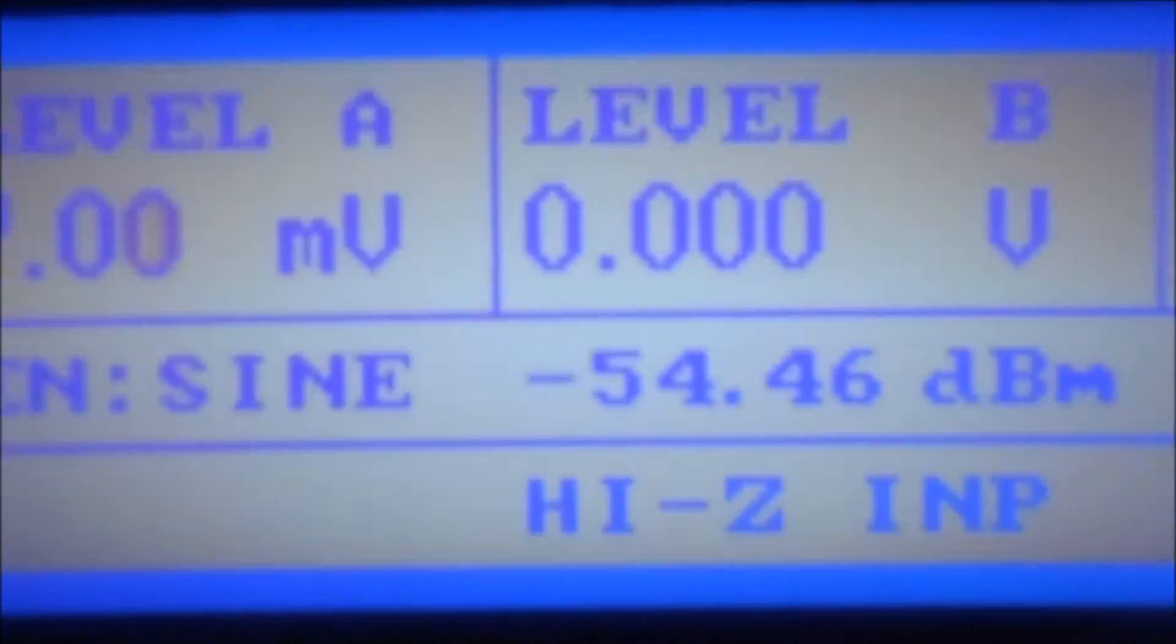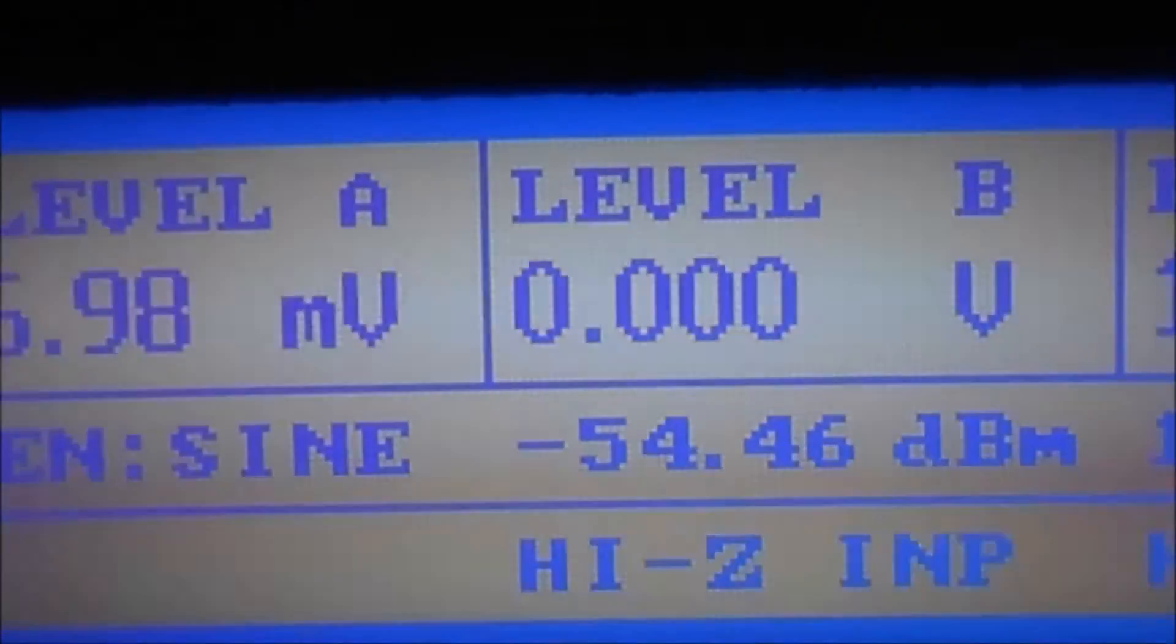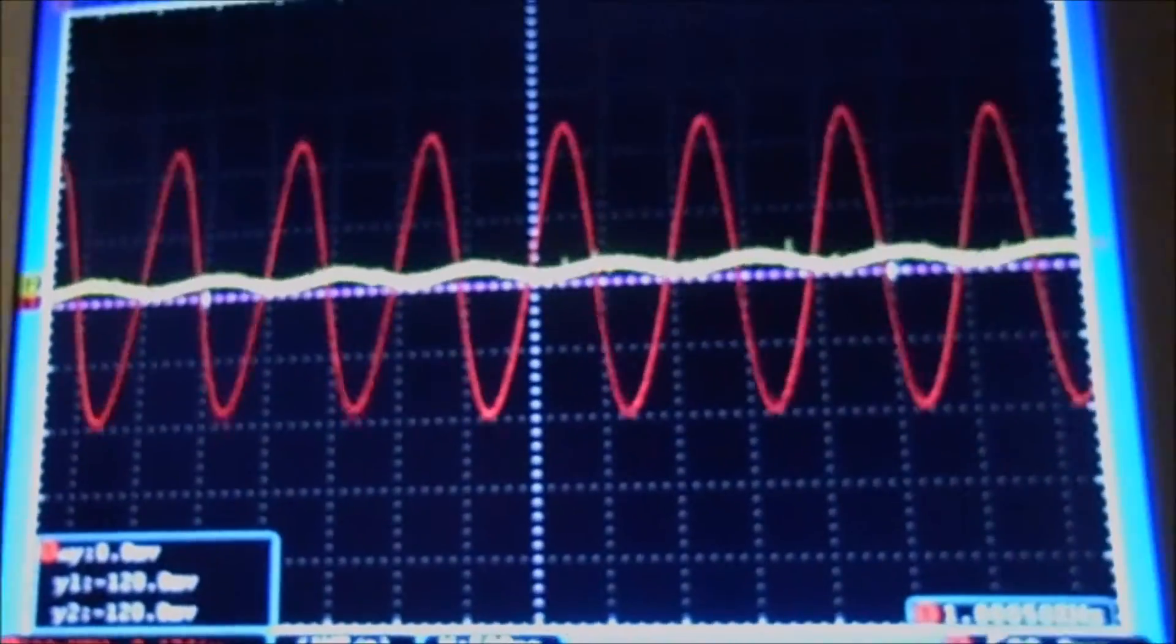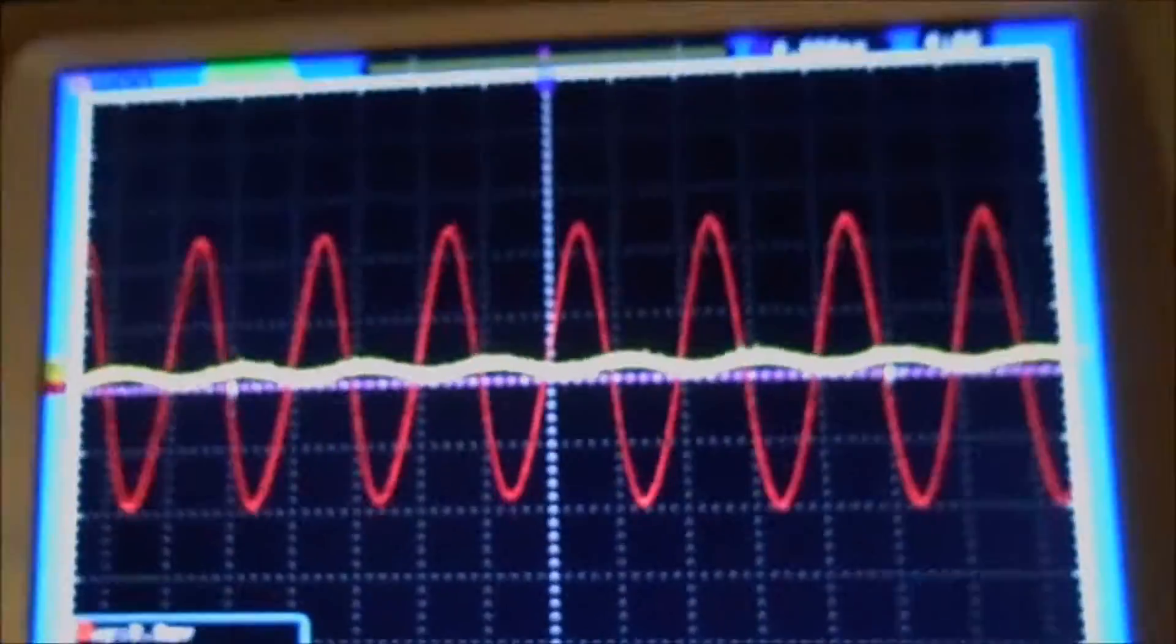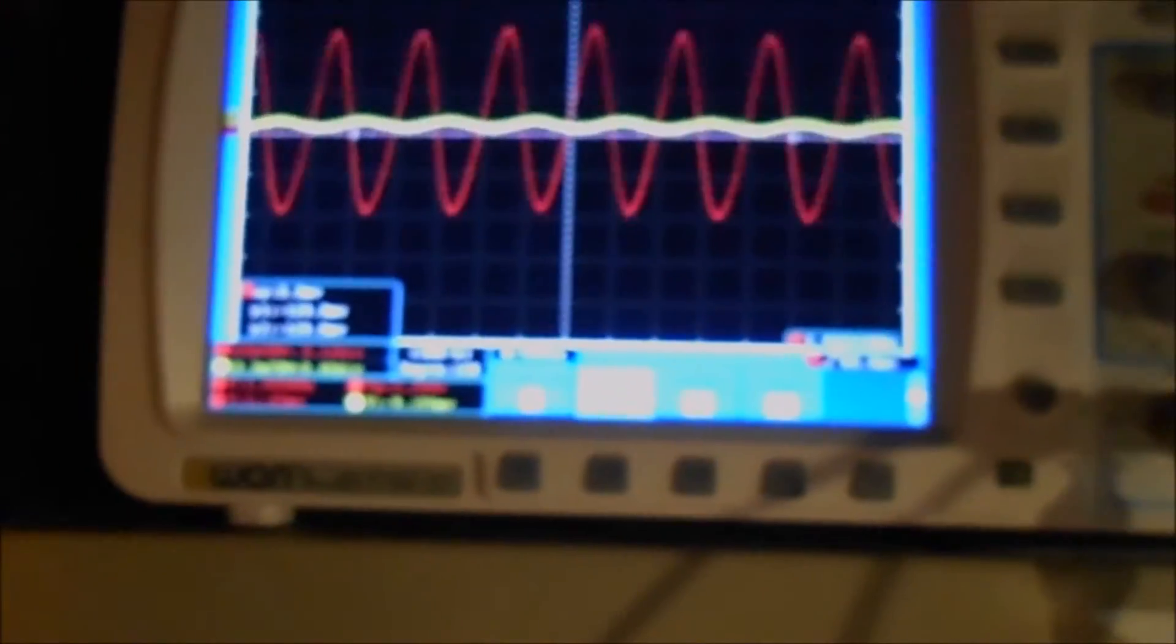And you can see minus 54.46 dBm, minus 54 dBm. This is the dynamic range of the speech processor CT4RK PWM.